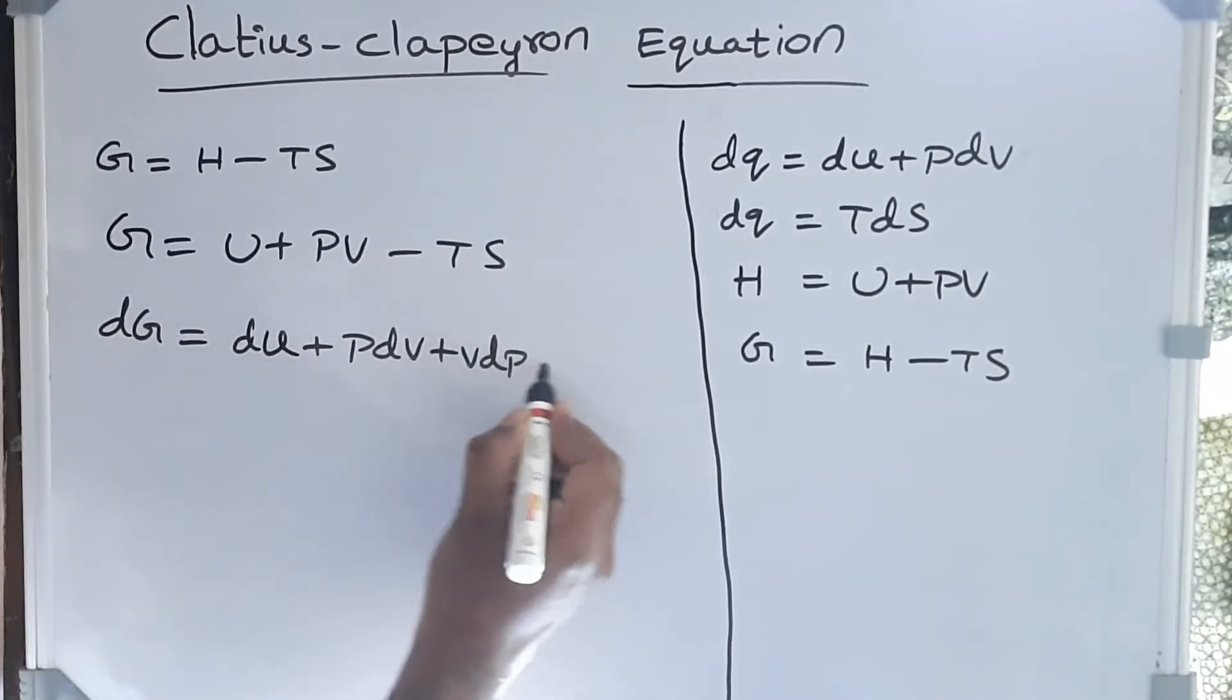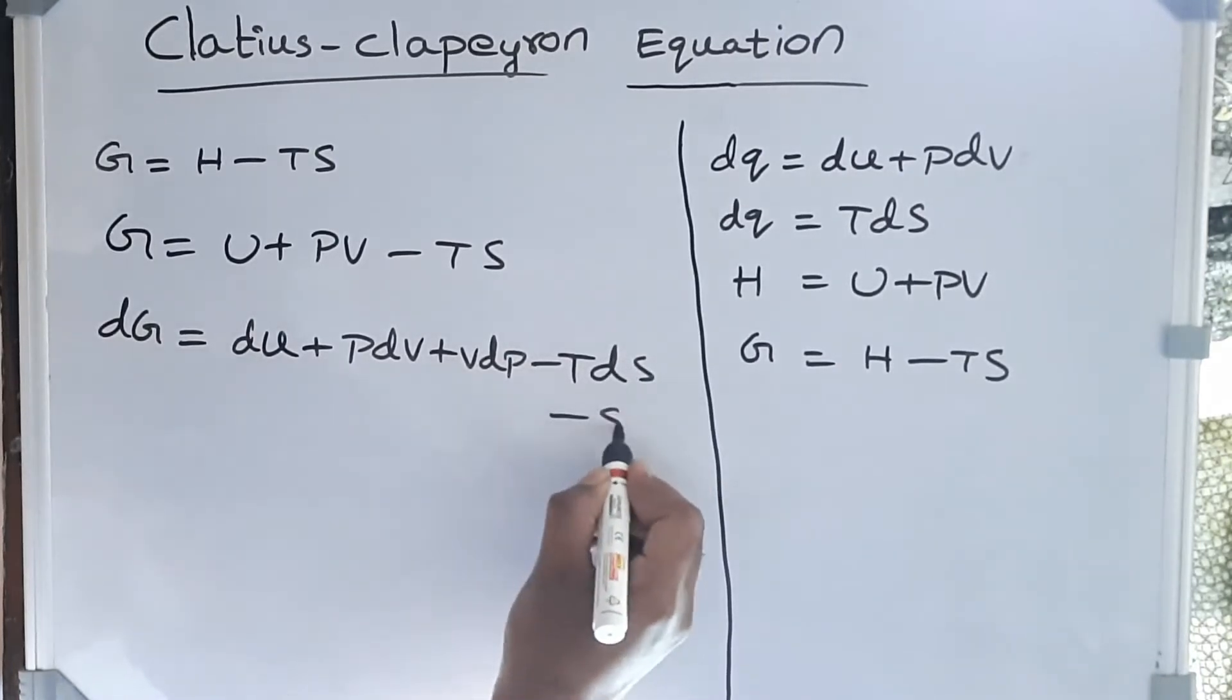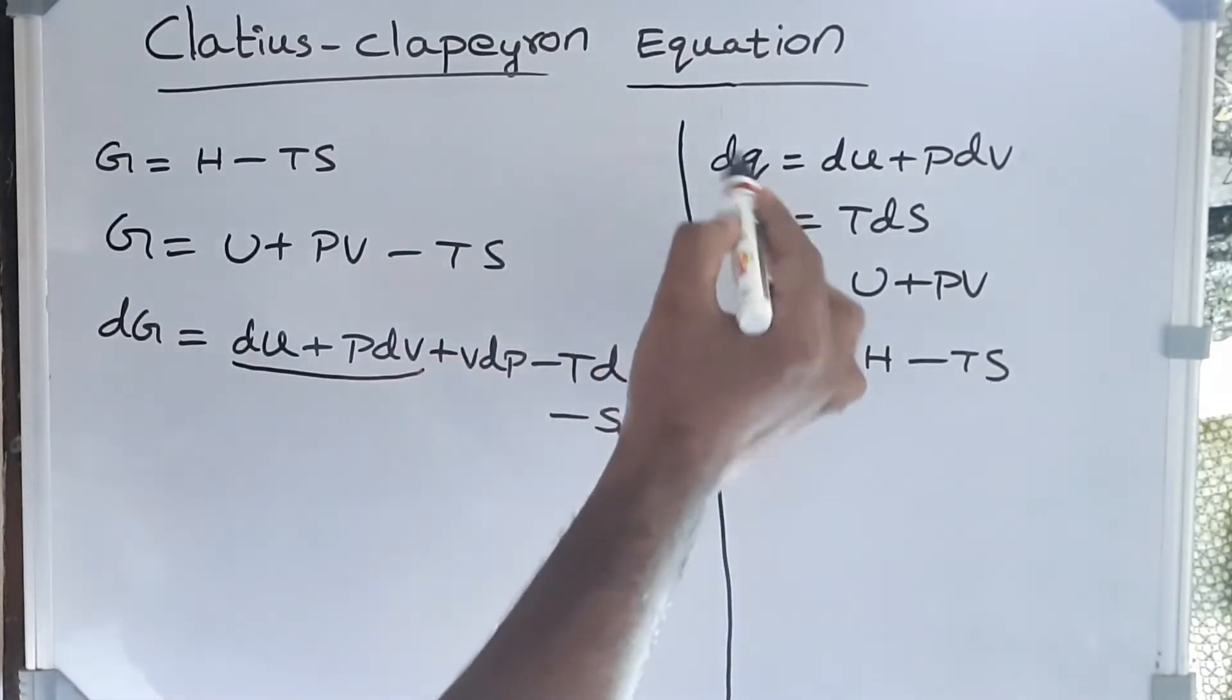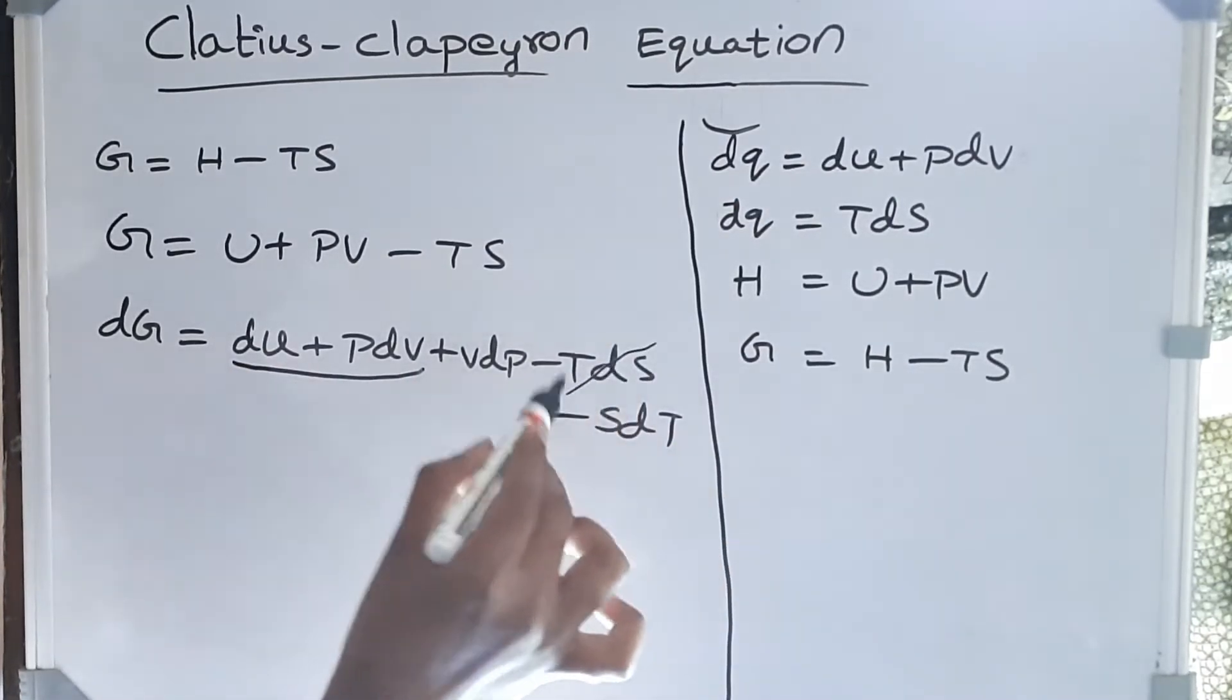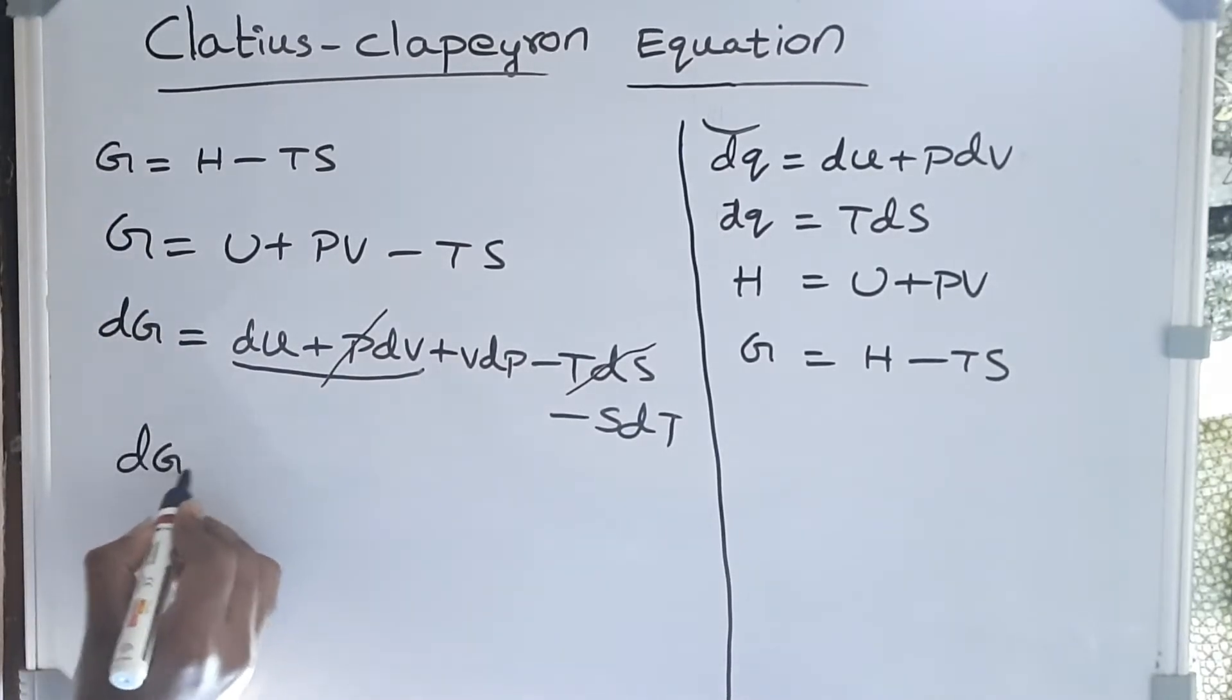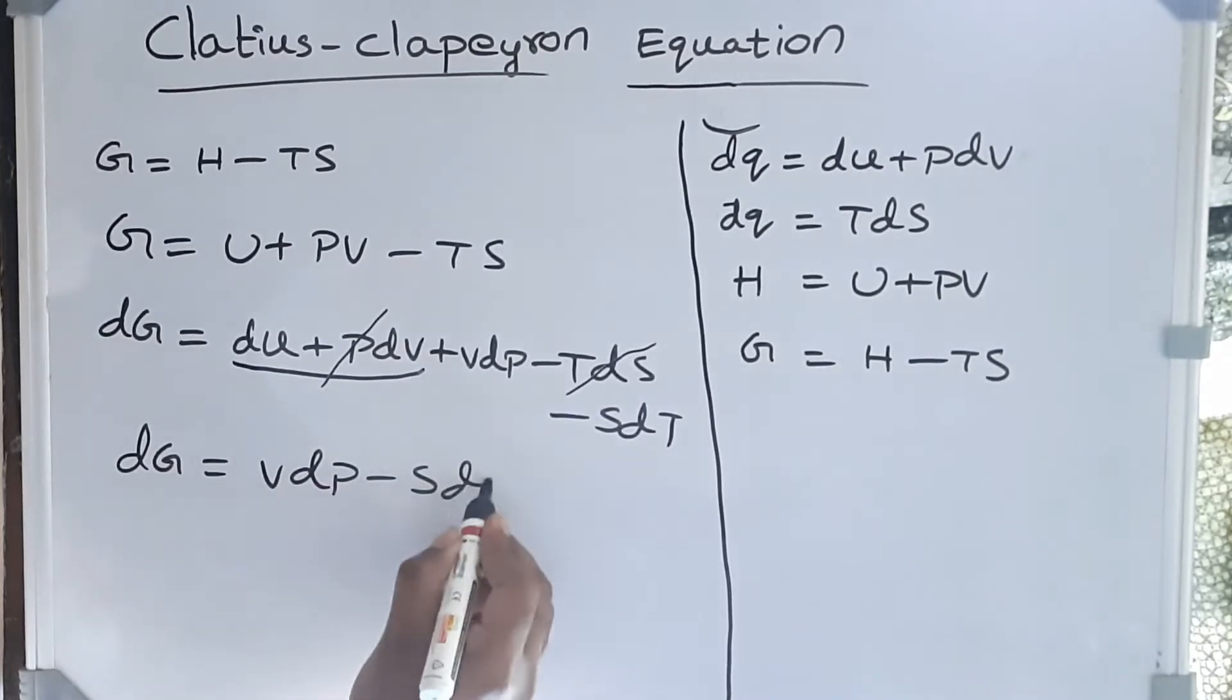As here we can consider dU + PdV is δQ and TdS is δQ, so this is δQ and this is minus δQ, so we can cancel these two. So we get dG = VdP - SdT.